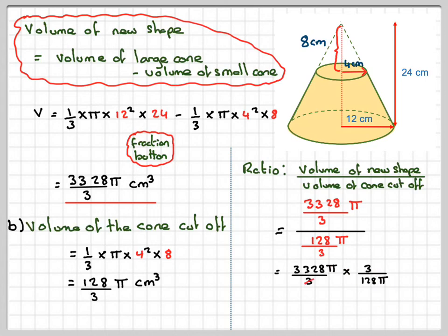So the 3's will cancel out and also the π's will cancel out. So when I calculate using the fraction button, we just need to use 3328 divided by 128. And that will give me an answer 26. So the ratio will be 26 to 1. So the ratio of the new shape to the cone cut off will be 26 to 1.